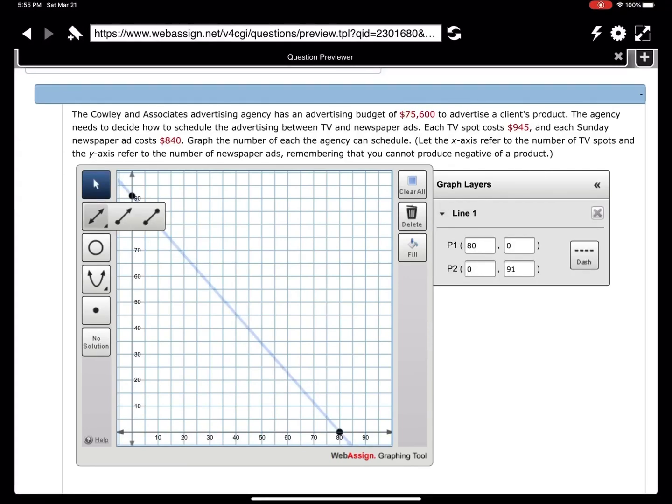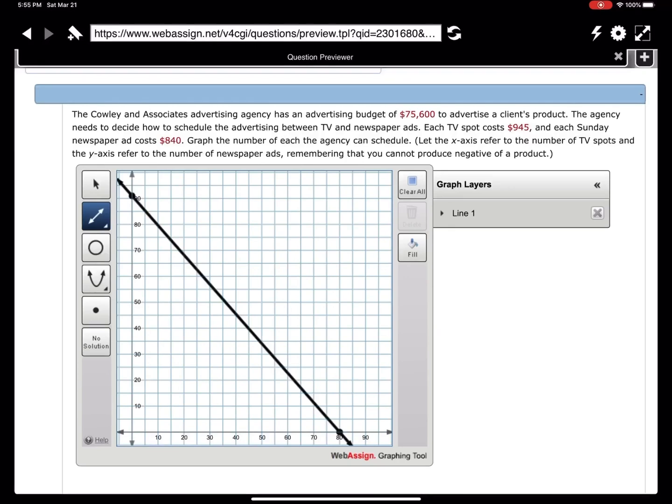I need to get other lines for my other inequalities. For instance, y greater than or equal to 0. I can pick any two points on the x-axis, and I'll be shading up. For my third line, I need to be on the y-axis, and that's it.